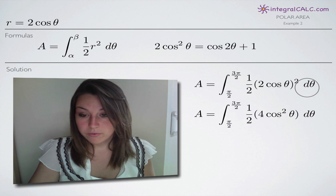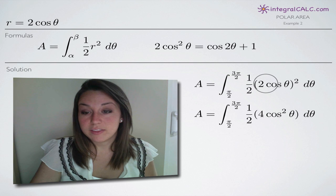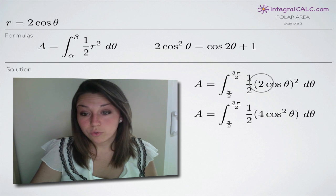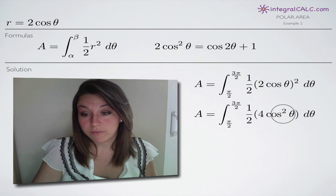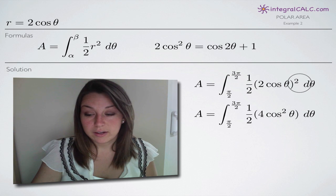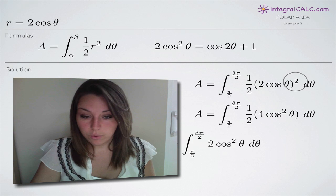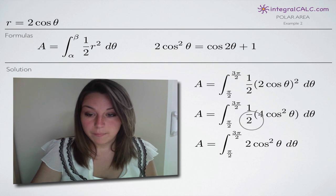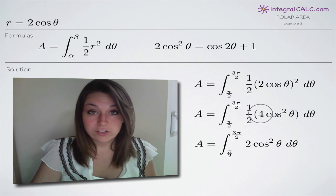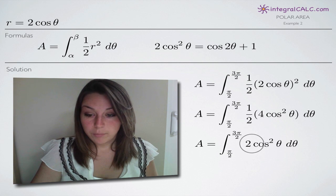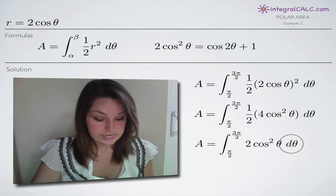Now for simplification. First, we square everything inside the parentheses: two squared is four, and cosine theta squared gives cosine squared of theta, removing the outer exponent. Then we cancel the one-half with four: one-half times four equals two. So we're left with two out front times cosine squared of theta d theta.